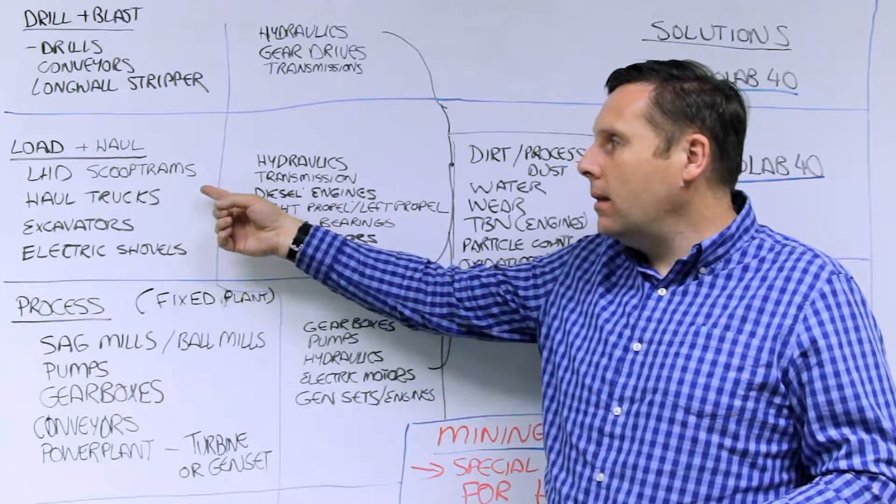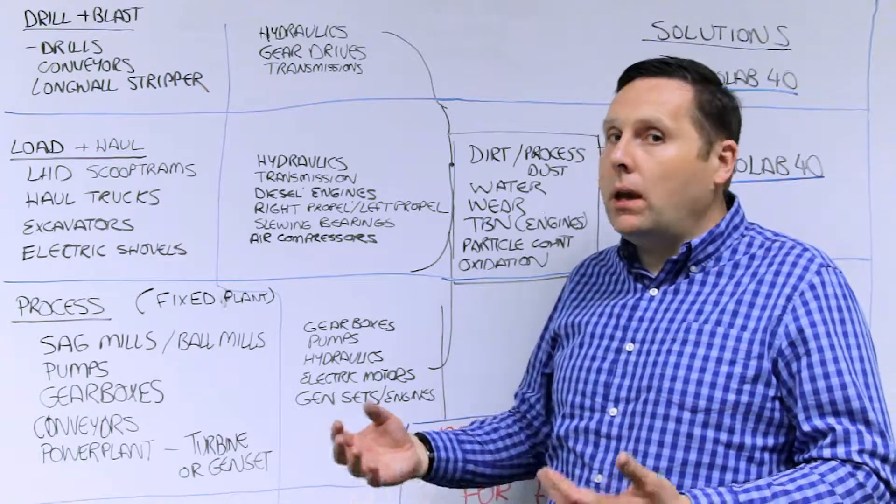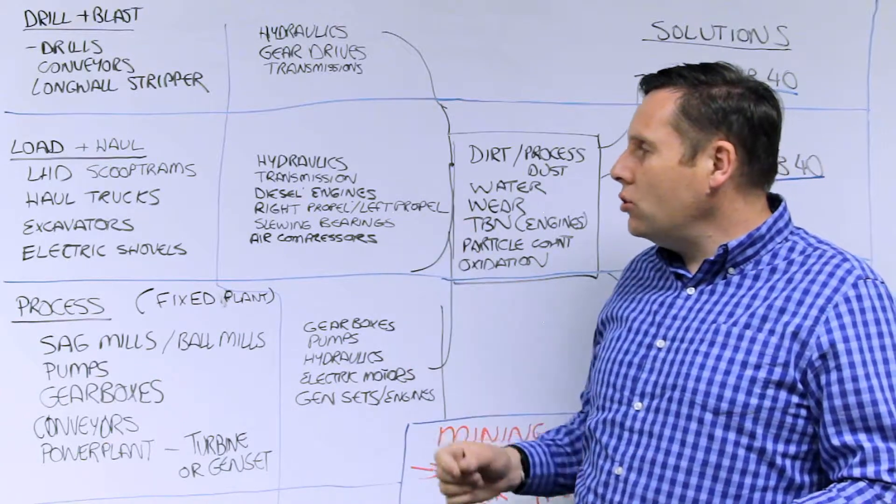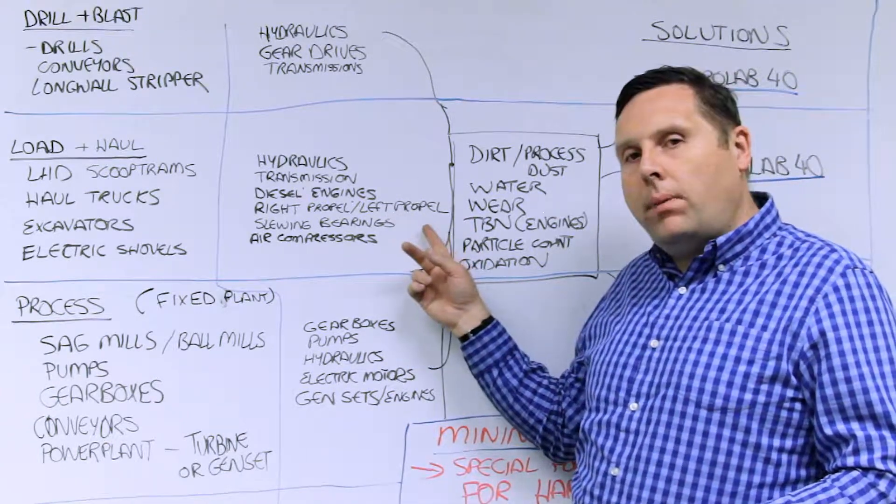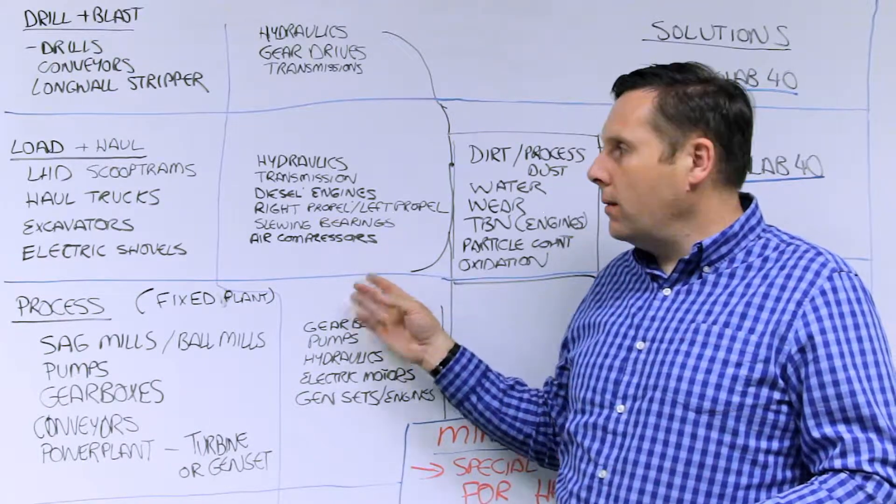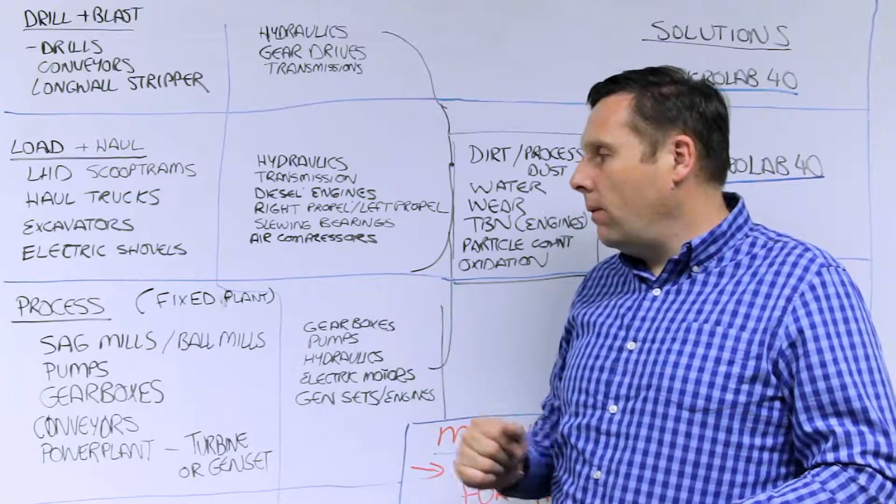Also known as scoop trams, they can be diesel engines, but they can also be electrical as well. Hydraulics, transmission systems, diesel engines, right propel, left propel gear sets, slewing bearings, and air compressors are all components that are on these devices that would be candidates for fluid analysis.